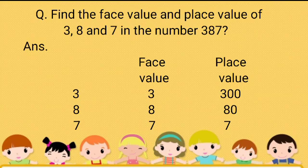5 is in hundreds place, so the place value of 5 is 500. Now let us solve a question where we find both the face value and the place value of 3, 8, and 7 in the number 387. The face value of 8 is 8 itself, and the place value is 80, or 8 tens. 7 is in ones place, so the face value of 7 is 7 itself, and the place value is 7, or 7 ones.